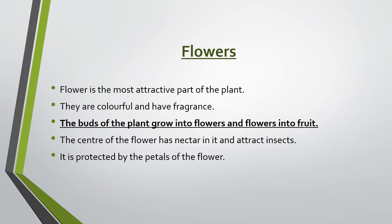Now, what is a flower? When we see a plant, the most attractive part or the first thing we see is its flower. It is the most attractive part and it also has fragrance. Now, how are these flowers developed? The plant has buds. From these buds, the flowers are developed, and from these flowers, fruits are developed. The flower has nectar in its center - a sweet juice which insects like honeybees sip on to produce honey. That center is protected by the petals.